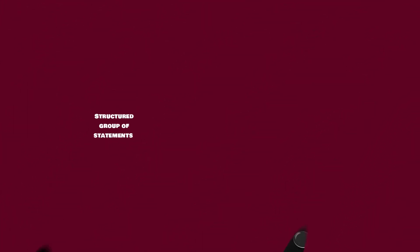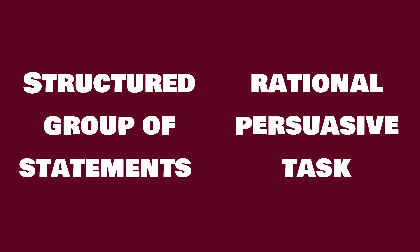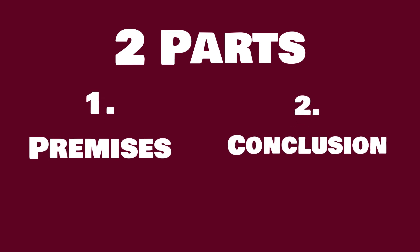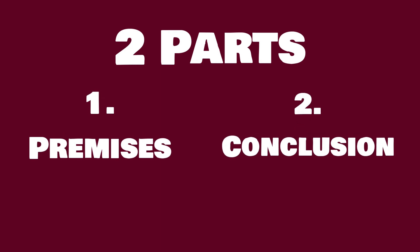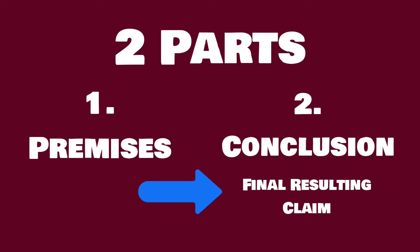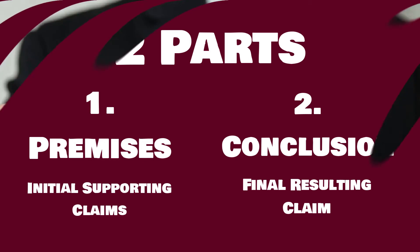We know that an argument is a structured group of statements or propositions intended to perform a rational, persuasive task. We also know that there are both deductive and inductive arguments, but all arguments have the same two basic parts: premises and conclusions. One or more of the statements is the conclusion and the other statements are the premises. The conclusion — our final resulting claim — is supposed to follow from the premises, the initial supporting claims. The purpose is to convince the reader that the conclusion is true, assuming that the premises are true.